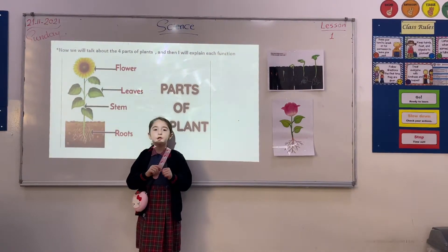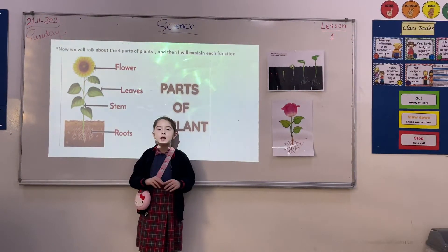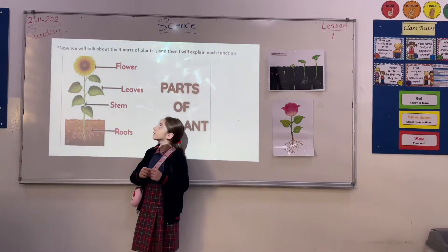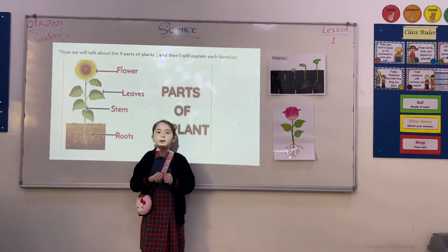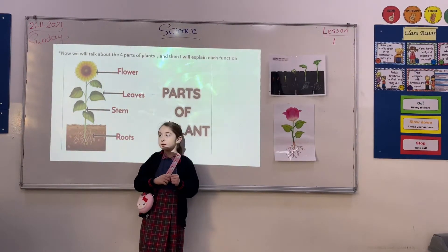Leaf: the leaf uses light, air, water, and salt to make food for the plant. Flower: the flower makes food for the seeds.